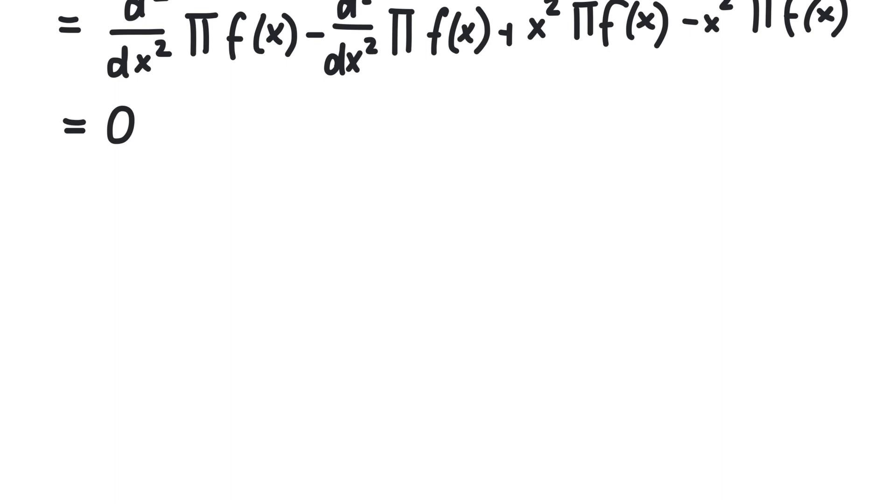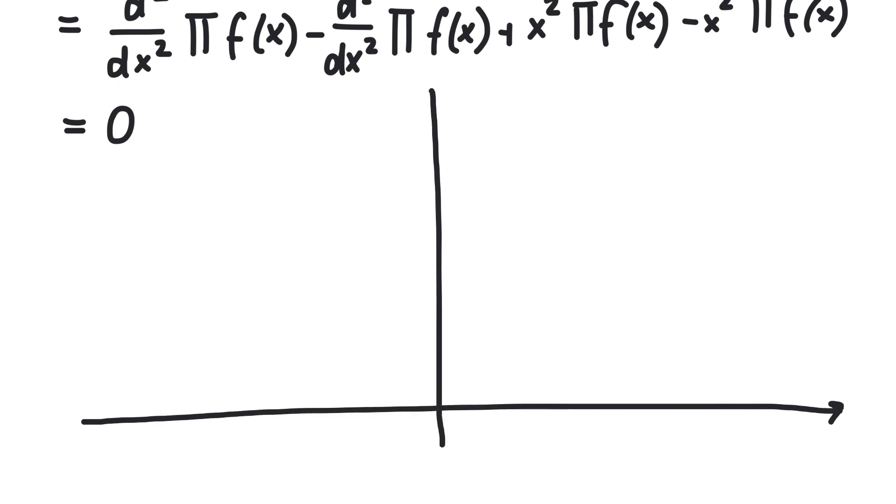Let's look at some eigenfunctions of the harmonic oscillator. We know their energies, so this one will be at one half h-bar omega, the next one at three over two h-bar omega, and so on.